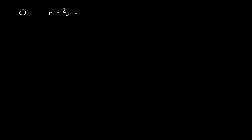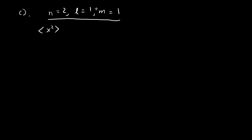Now we move on to part c, dealing with the case where n=2, l=1, and m=1. We're going to look for the expected value of x squared. This time we can't use the same symmetrical argument as last time, because if you check the plot for this particular wave function, you'll see that the expected value of x squared is not going to equal the expected value of y squared and z squared.